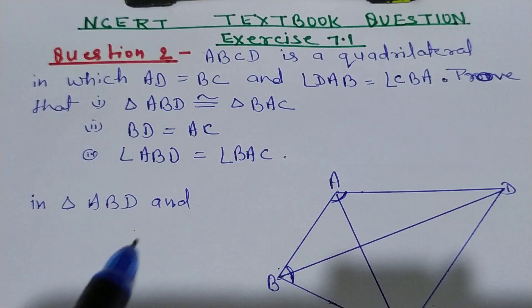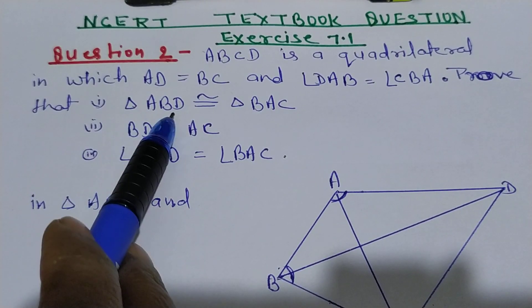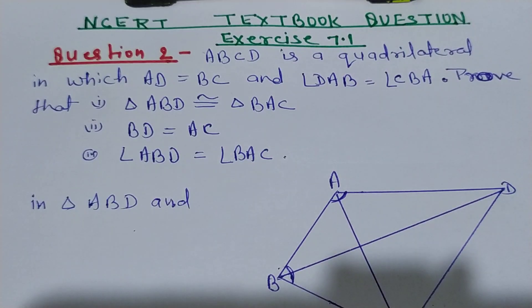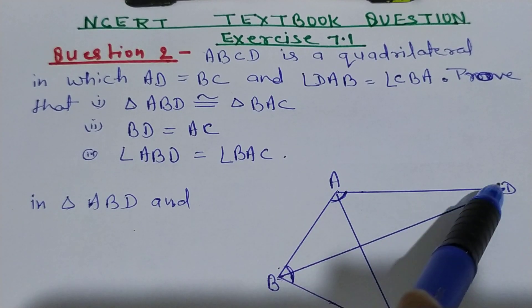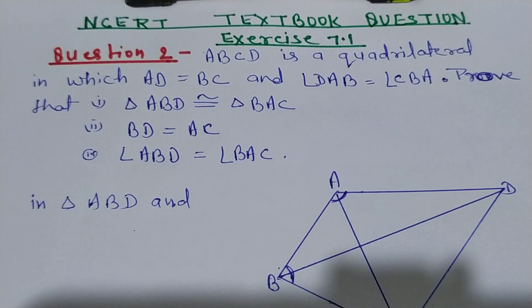Then we have to prove that triangle ABD congruent to triangle BAC. Triangle ABD congruent to triangle BAC means this triangle and this triangle.